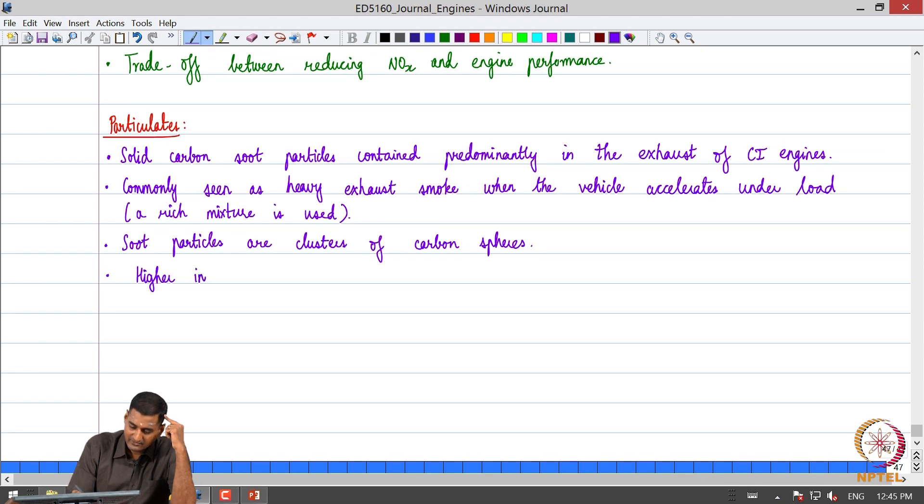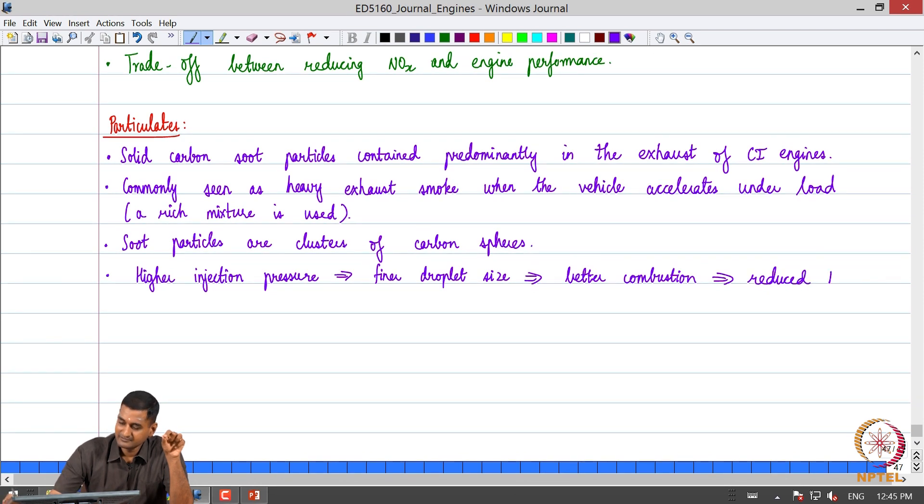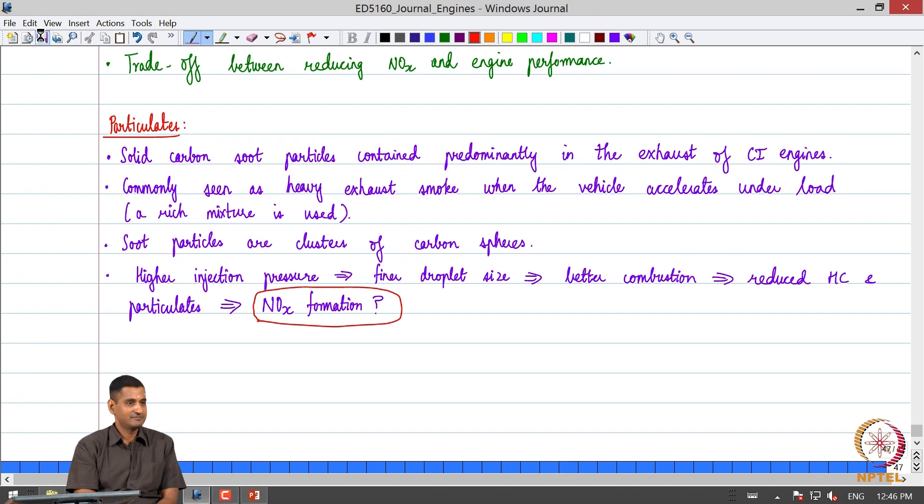But for particulates, one way is to also have higher injection pressure. People have figured out that if you increase the injection pressure, we are going to have finer fuel droplets. They are going to be like a spray, leading to better combustion. This will reduce hydrocarbons and particulates, but then NOx formation is a problem. Because we have better combustion and higher cylinder temperature, the potential for NOx is higher. That becomes a severe problem in CI engines.